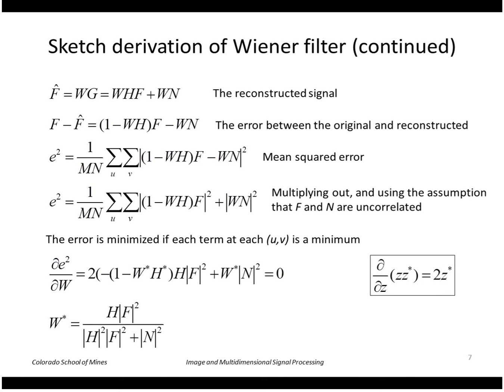Solving for w star, or the conjugate of w, I get this expression, and I take the complex conjugate of each side and get this. So this is the Wiener filter that we are looking for, expressed in the frequency domain.